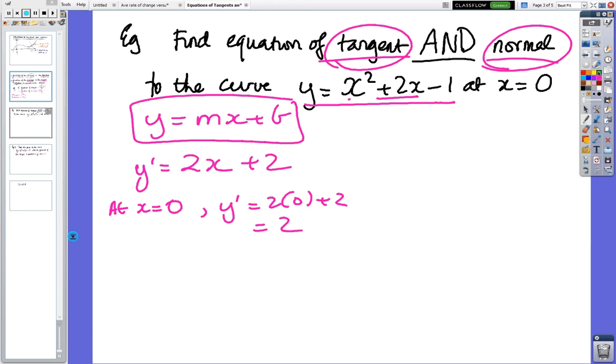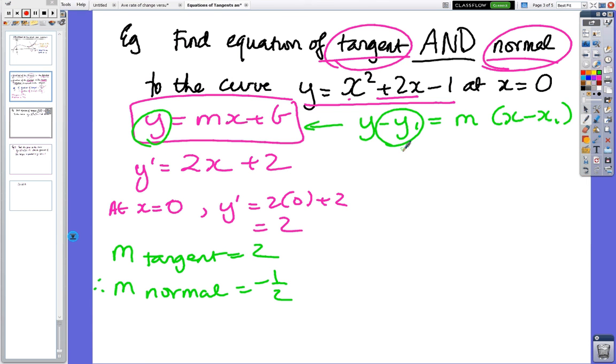y dash equals 2 times 0 plus 2 equals 2. So straight away, I know that the gradient of the tangent equals 2, and I also know straight away, that the gradient of the normal equals minus 1 half. And we're going to use both those values in this question. Now, we can use, there's two ways of doing it. We've got y minus y1 equals m bracket x minus x1. Or we can just use y equals mx plus b, and I'm going to just use y equals mx plus b.